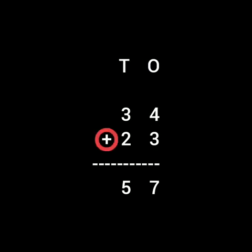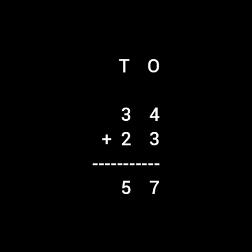4 plus 3. On one hand you have to take out 4 fingers, and on the other hand you have to take out 3 fingers. Now let us count them together: 1, 2, 3, 4, 5, 6, 7. So the answer for the ones column is 7.